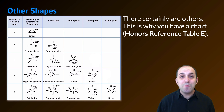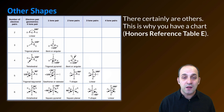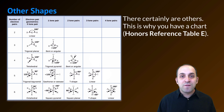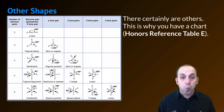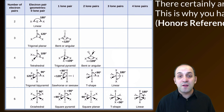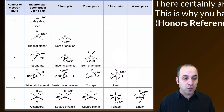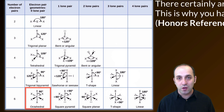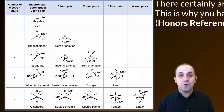There are certainly other shapes as well — I can't stress that enough, and that's why I'm giving you a chart, which is Honors Reference Table E. You should be able to use this chart to figure out the shape of any covalent molecule where there's one central atom. For instance, if we were talking about a molecule with a central atom making six bonds to other atoms, you should be able to use this chart to figure out that we're talking about an octahedrally shaped molecule.